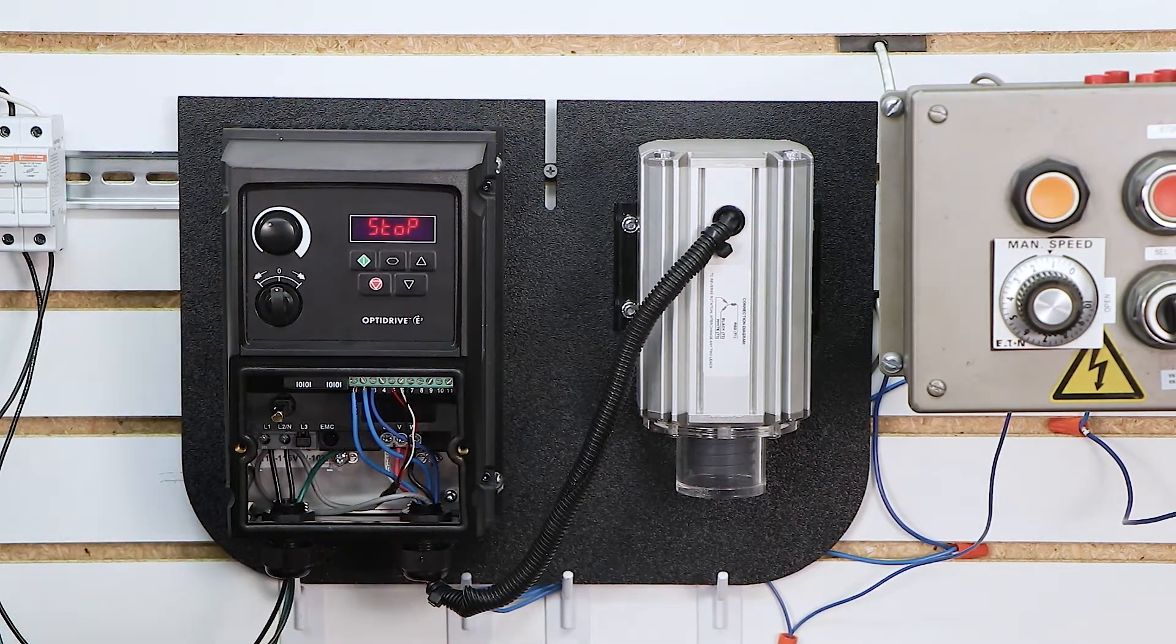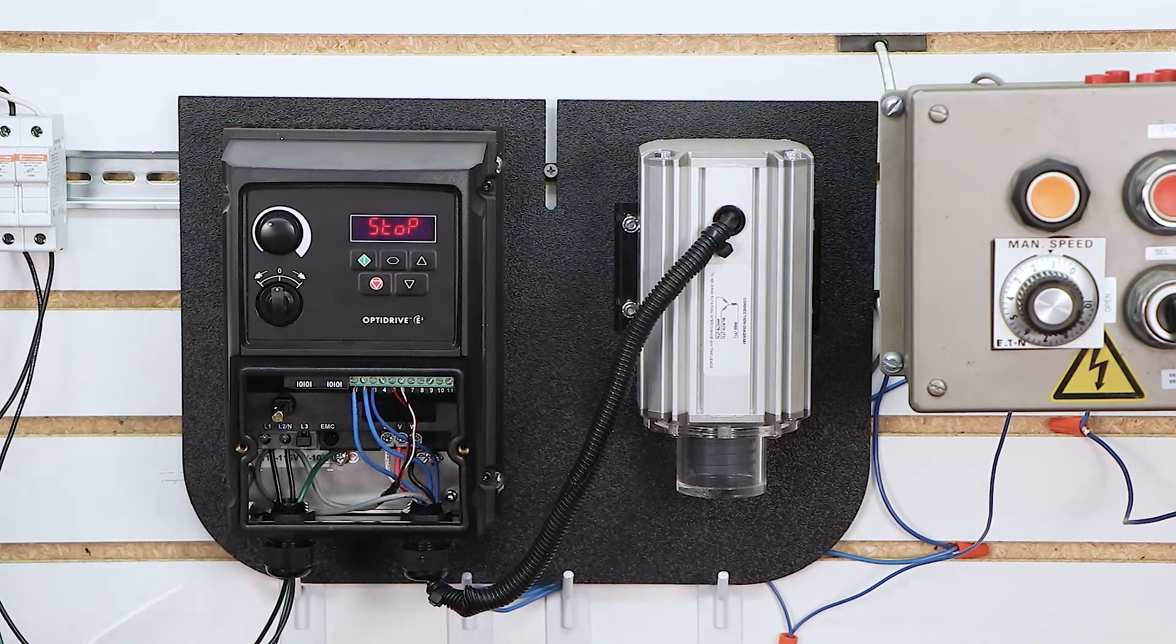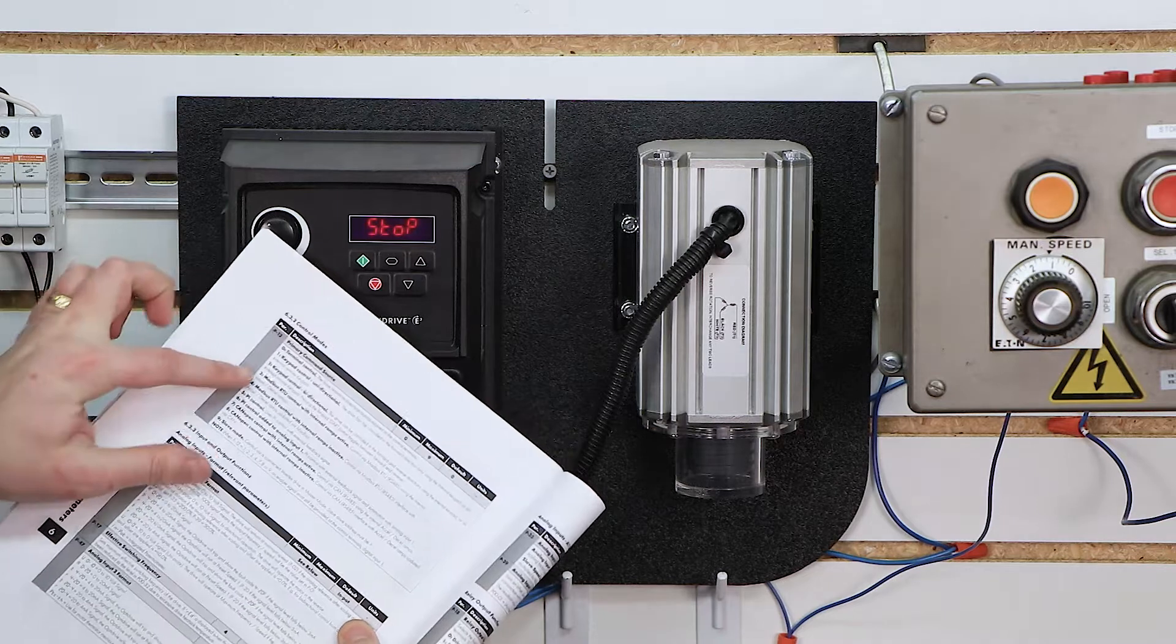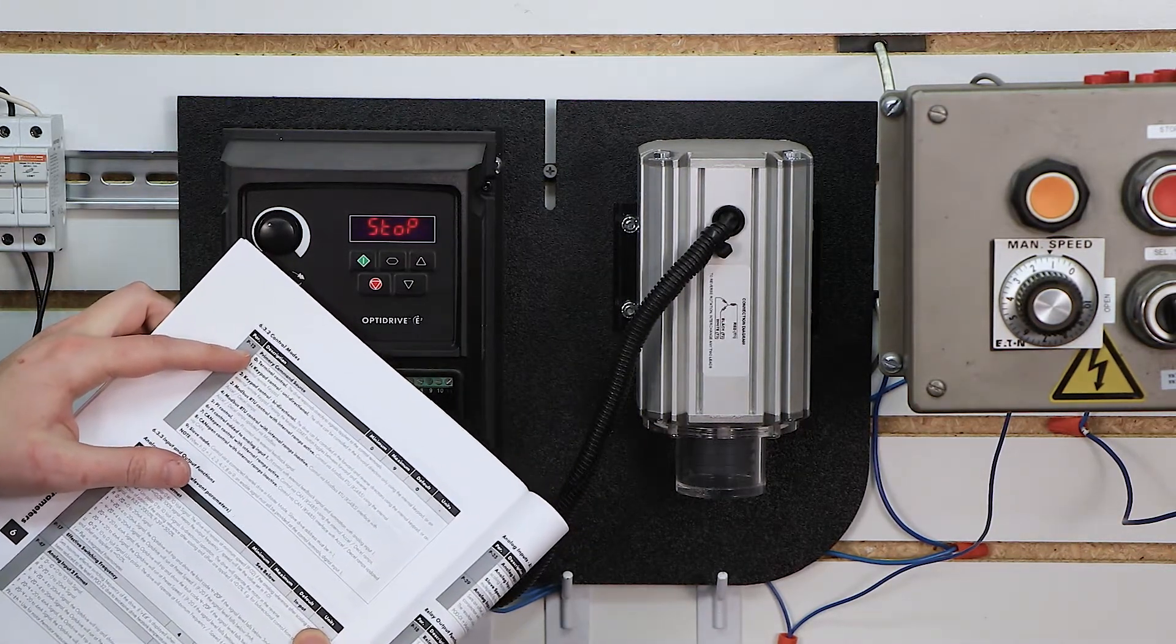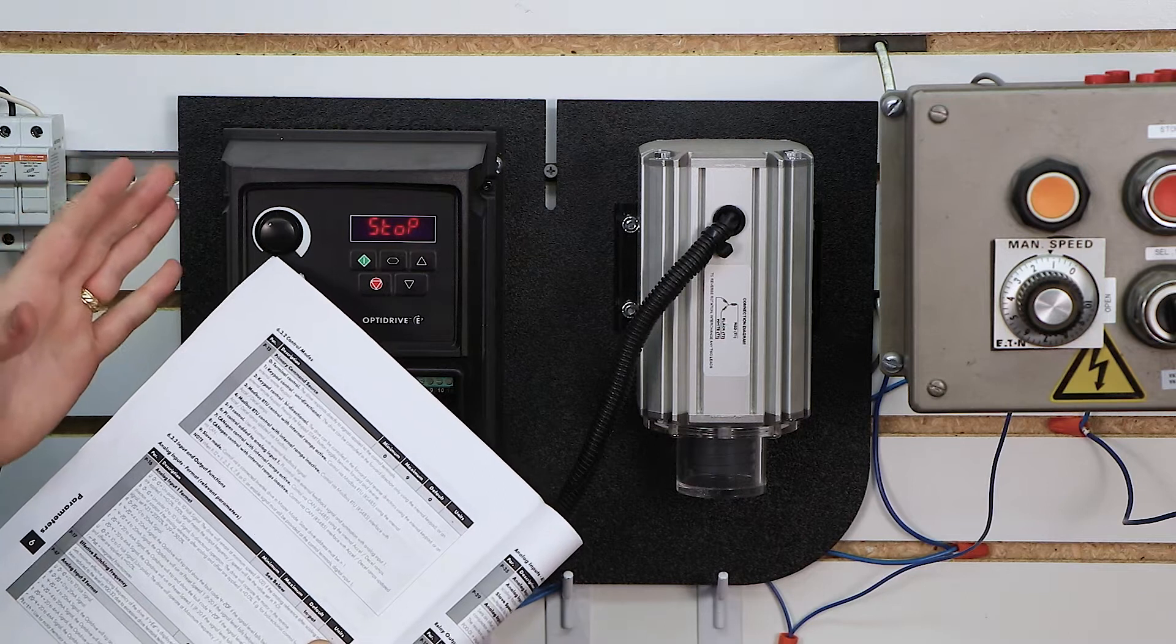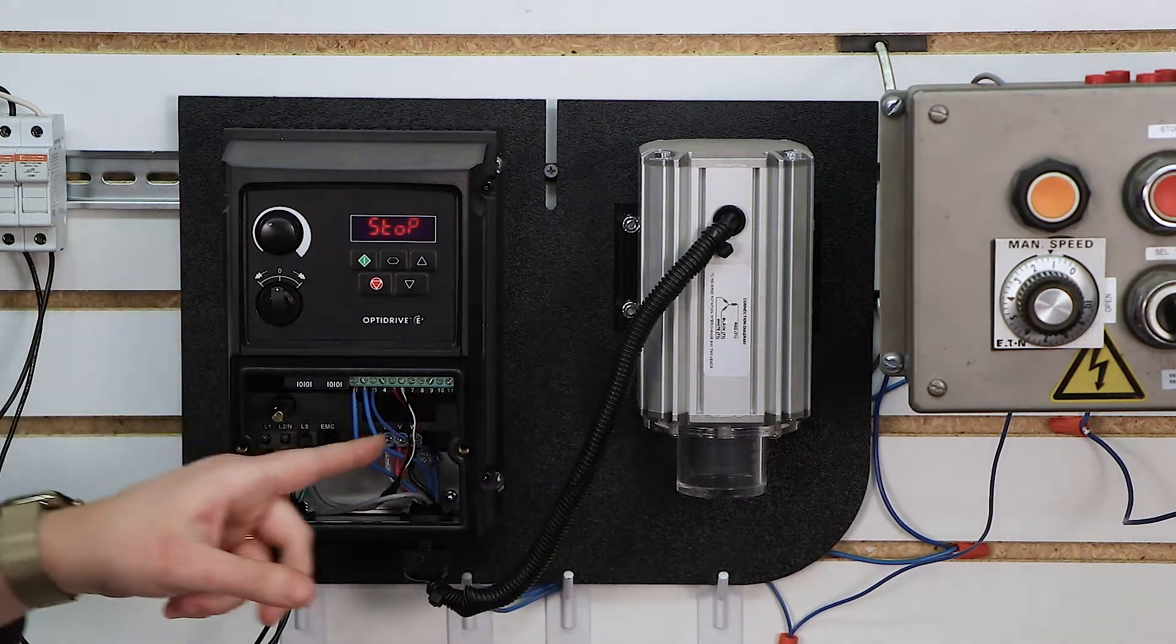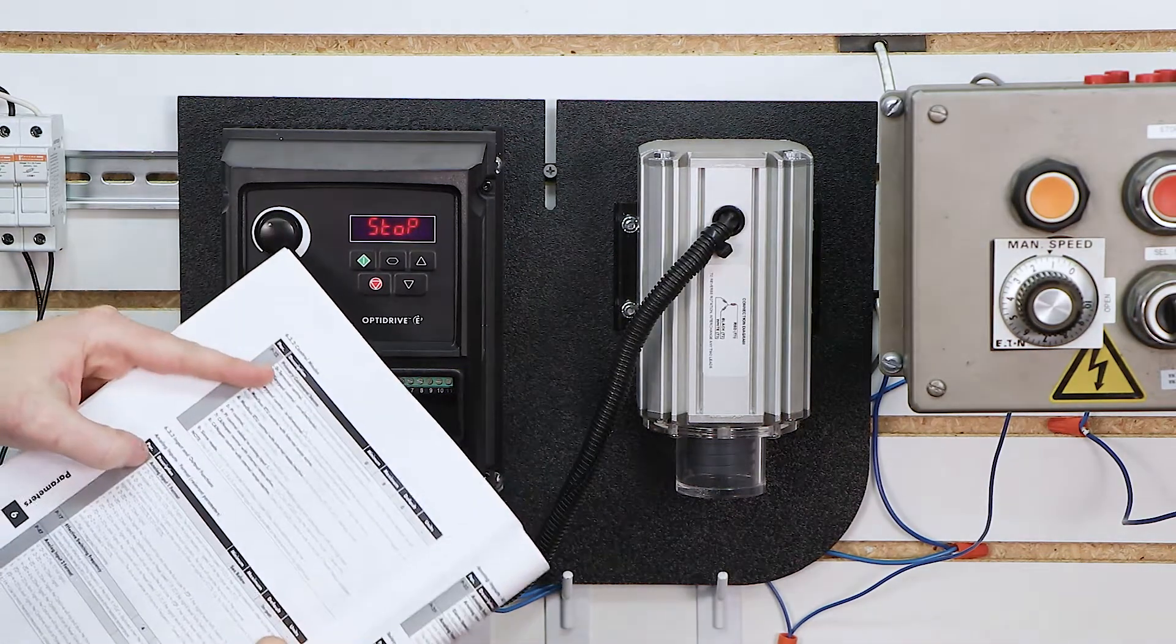And to get started here, we're going to start with the programming. Now the programming is going to match what is inside of our manual here, and there's really only three parameters we need to change. Parameter 12, which is our primary command source, is going to actually tell the drive where our start command is issued from. Now we're not telling it yet if it's a selector switch or a push button. We're going to do that at parameter 15. Just to get started, we're going to tell the drive, hey, for your start command, look at the terminal strip. That's this green strip down here. So to do that, we need to set P12 equal to zero.